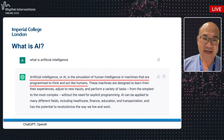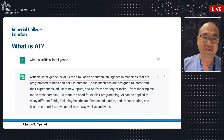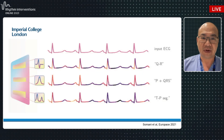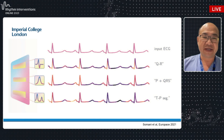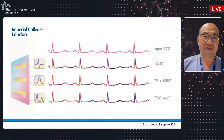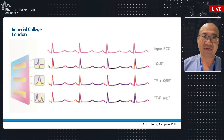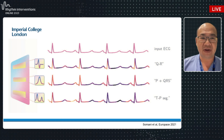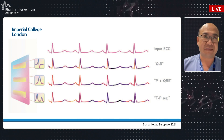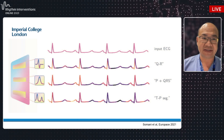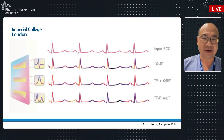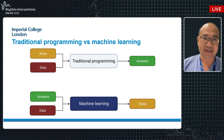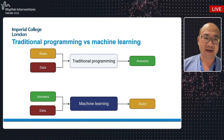If you ask ChatGPT what AI is, it will tell you that AI is the simulation of human intelligence in machines programmed to think and act like humans. When you apply an AI algorithm to the ECG, it is not trapped by our conventional way of viewing the ECG as P wave, QRS, and T wave. The model instead has the freedom to look at all constituent parts and combine them in non-linear ways to make diagnoses, prognoses, and risk stratification.